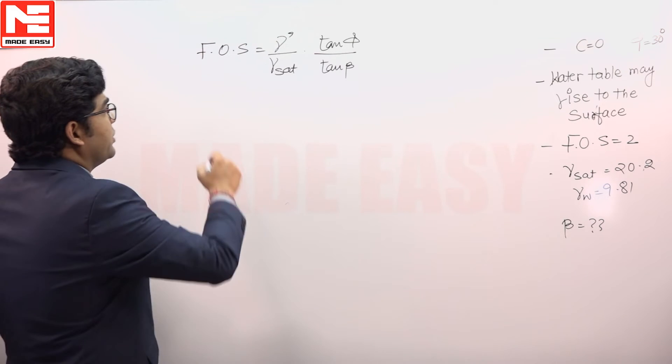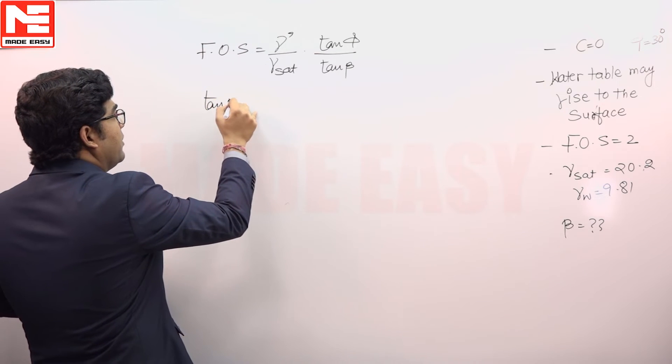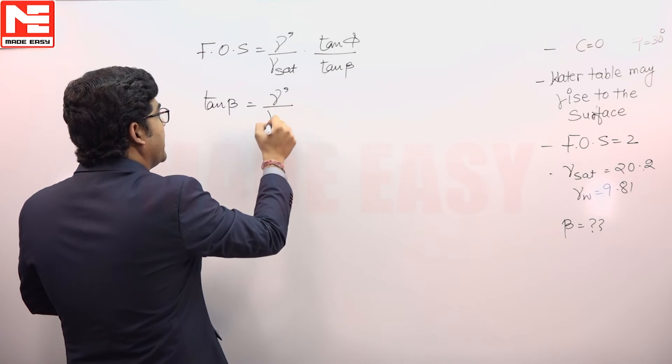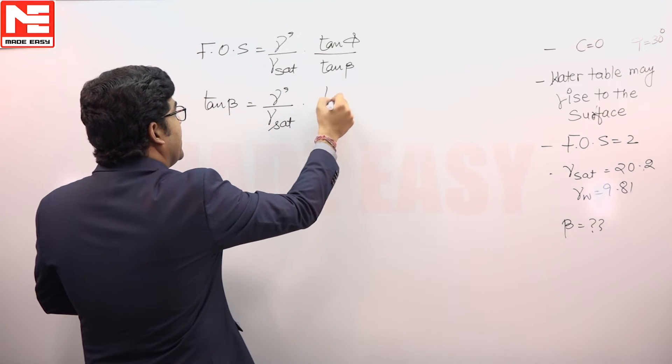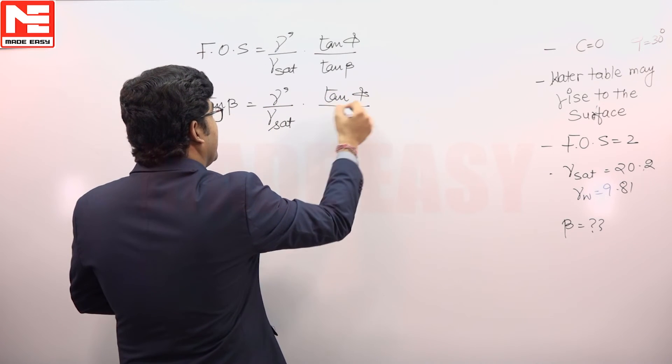The question is asking about beta, so in this case tan beta will be equivalent to gamma submerged divided by gamma saturated times tan phi divided by FOS.